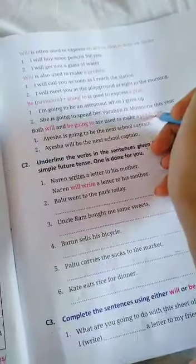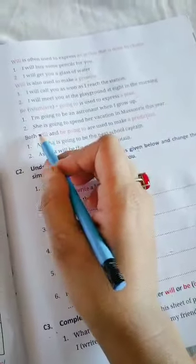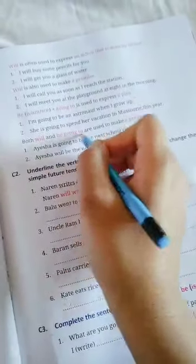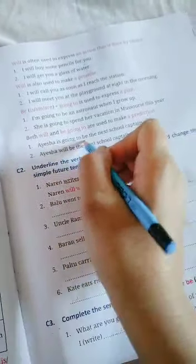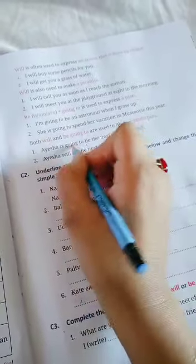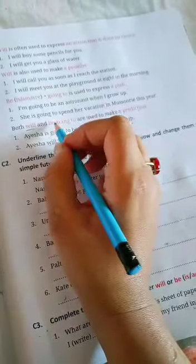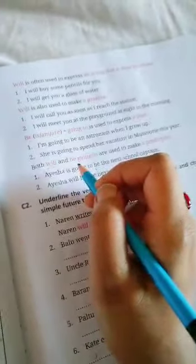Both will and be going to are used to make a prediction - when we make a prediction about something that might happen. See: Aisha is going to be the next school captain. This is a prediction - maybe Aisha will become the next school captain. Aisha is singular, then is plus going to: Aisha is going to be the next school captain. Or: Aisha will be the next school captain. In case of prediction, both are correct - be going to and will.